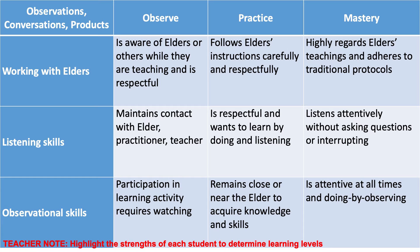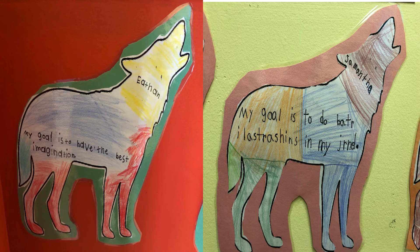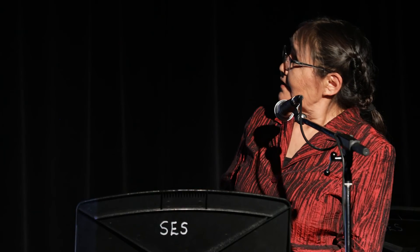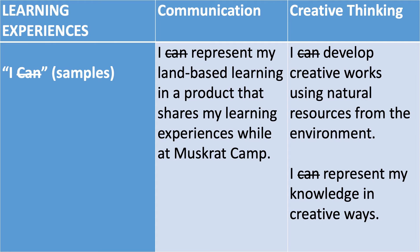Here's an example of a grade three student on the left and a grade one student on the right. They set their goals — the grade one student is going to have better illustrations in her artwork or in her journal. We broke it down into crow and wolf clans, so students understand their relationship to one another through a clan system.